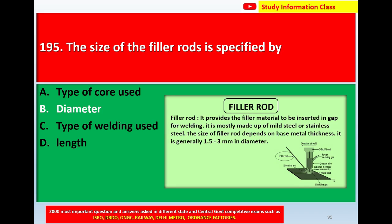The filler rod provides the filler material to be inserted in a gap for welding. It is mostly made up of mild steel or stainless steel. The size of the filler rod depends on base metal thickness; it is generally 1.5 to 3 millimetres in diameter. For question number 195, the size of the filler rod is specified by option B, diameter.